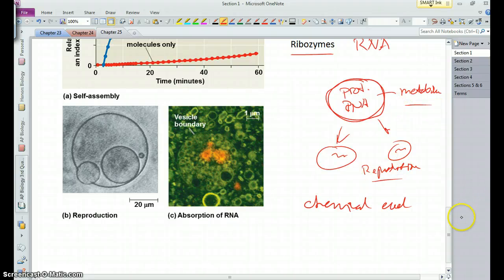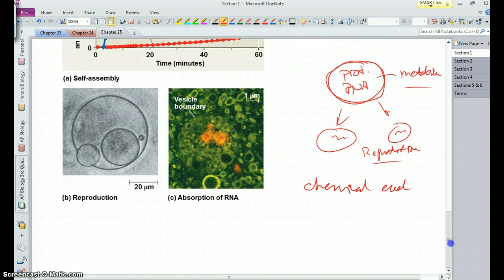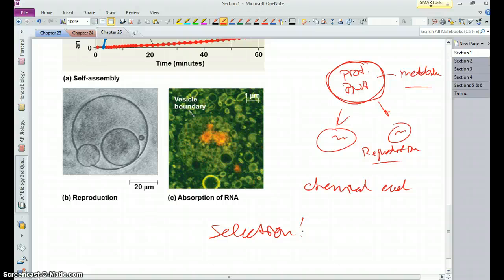And then over time, exhibiting the characteristics of life. There would have been, of course, selection for combinations of compounds and structures that were more stable. A lot of combinations probably didn't work and just broke apart. They were basically selected against, if you will. But ultimately it would have led to what we would call as the first living thing, the first type of cell, the first prokaryote.